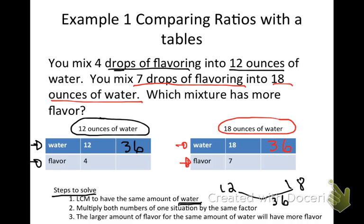Now, going back to what we did in the last section: how do I get from 12 to 36? I need to multiply by three. Whatever you do to one number, you have to do to the other — so four times three is twelve drops of flavor. Now for the other chart: eighteen times two is 36, so multiply by two. Seven times two is fourteen.